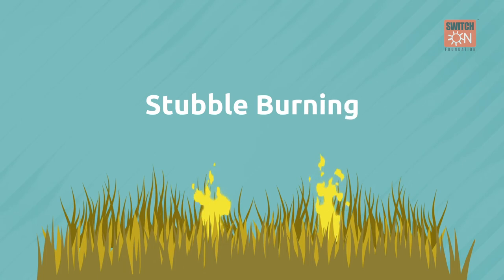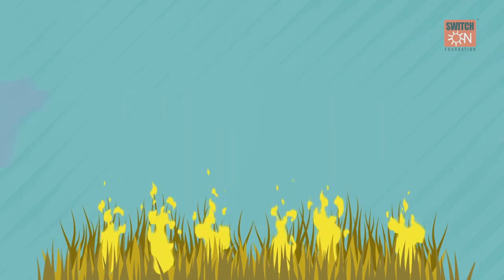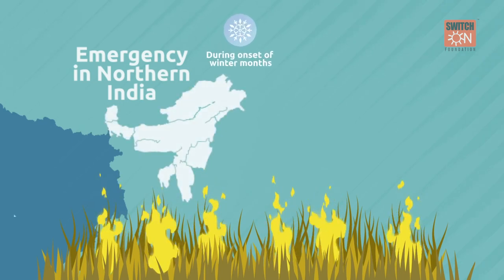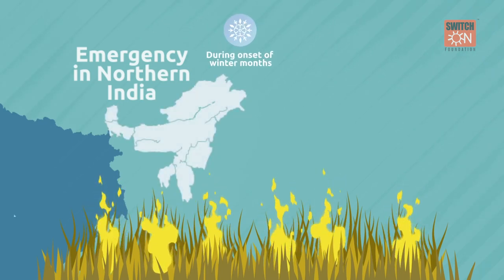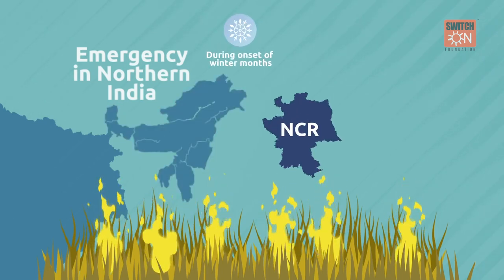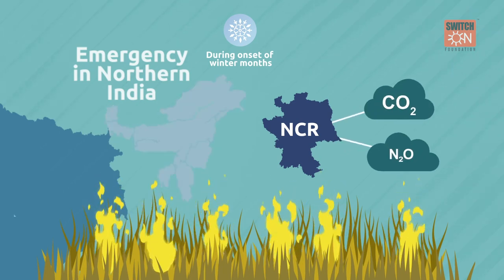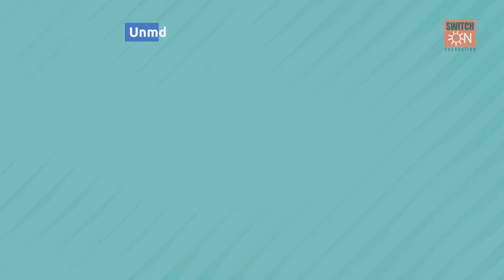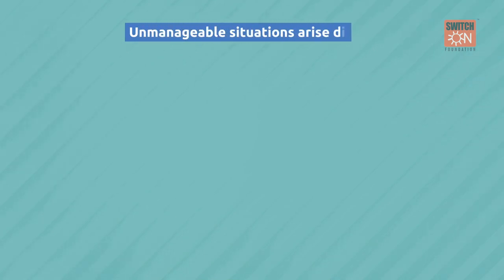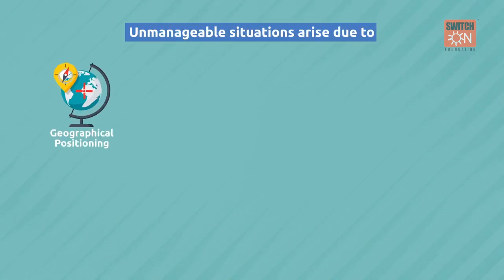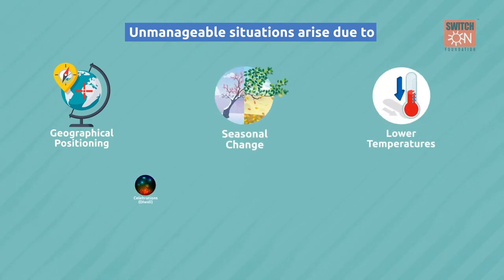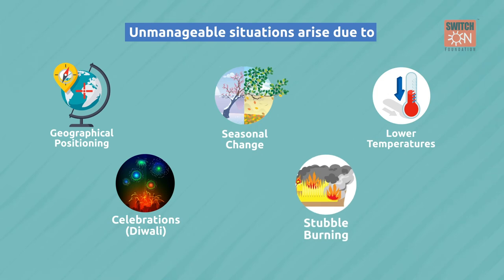Stubble burning has been an emergency in northern India for many years, during the onset of the winter months. The NCR region becomes a cesspool of carbon and nitrous oxide. The situation gets unmanageable due to many reasons like geographical positioning, seasonal change, lower temperatures, celebrations like Diwali, and obviously stubble burning in neighbouring areas.